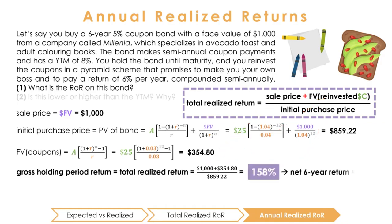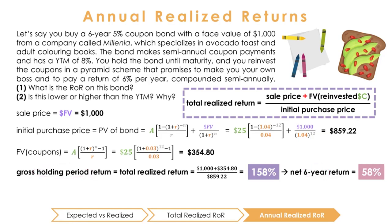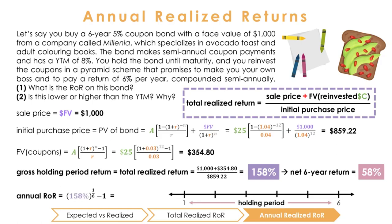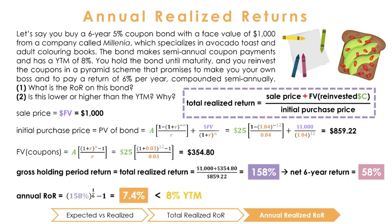This equals 158%, meaning that we earned a net return of 58% over the 6 years. But in order to compare our realized rate of return to our expected YTM, we must put them on the same playing field by converting our 6-year rate of return into an annual rate of return. Let's annualize this return by raising it to the power of 1/6 and subtracting 1 — in other words, 1 year is one-sixth of our 6-year holding period. This gives us the annual realized rate of return, or ROR, of 7.4%. This is lower than the yield to maturity of 8% because we reinvested the coupons at a lower interest rate of only 6%.